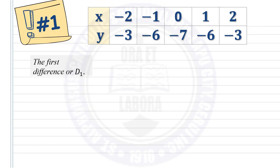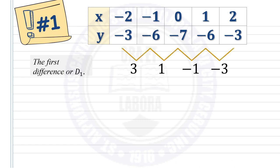Let's get the first difference. You subtract or get the difference of the succeeding y values. Negative 3 minus negative 6, then negative 6 minus negative 7, then negative 7 minus negative 6, and negative 6 minus negative 3. Negative 6 minus negative 7 is 1, negative 7 minus negative 6 is negative 1, and negative 6 minus negative 3 is negative 3.